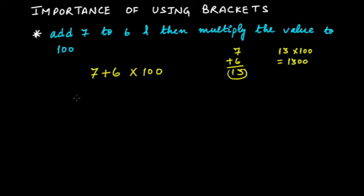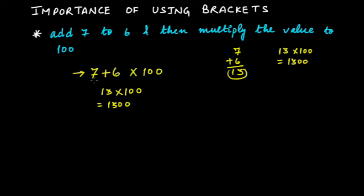What if you wrote it without brackets? You know you have to add 7 plus 6 and then the obtained value should multiply by 100 — you added 7 and 6, got 13, multiplied by 100, and got 1300. But what if some other person saw this expression and did the multiplication first — they multiplied 6 by 100 and then added 7? In that case, the answer would be 7 plus 600, which is 607 — completely different from the correct answer.